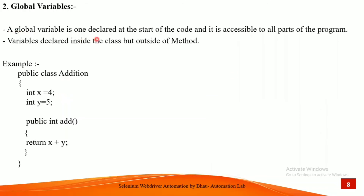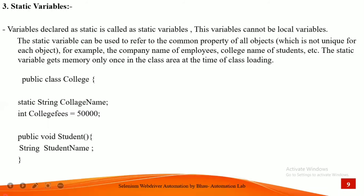To summarize: a global variable is declared at the start of the code, it is accessible in all parts of the program, and it is declared inside the class but outside the methods. For example, we have a method 'public int add' and two global variables x = 4 and y = 5, declared outside the method but inside the class. We'll see this practically in Eclipse.